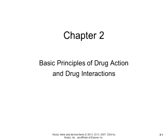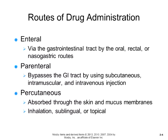There are types of routes of drug administration. Enteral is via the GI tract — that can be oral, rectal, or nasogastric route. Parenteral bypasses the GI tract using subcutaneous, intramuscular, and intravenous injections. Percutaneous is absorbed through the skin and mucous membranes, and this includes inhalation, sublingual, and topical medication.